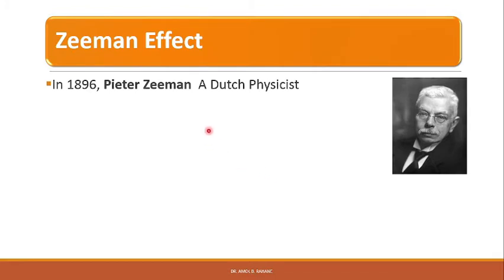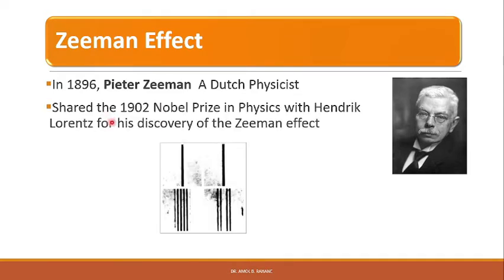The Zeeman effect was discovered by Dutch physicist Pieter Zeeman in the year 1896. He shared the 1902 Nobel Prize in Physics with Hendrik Lorentz for his discovery of the Zeeman effect.